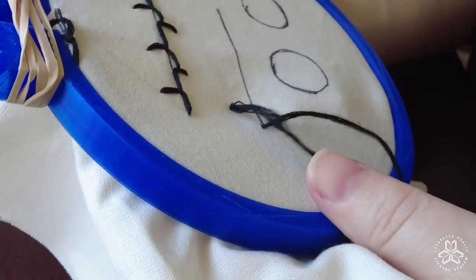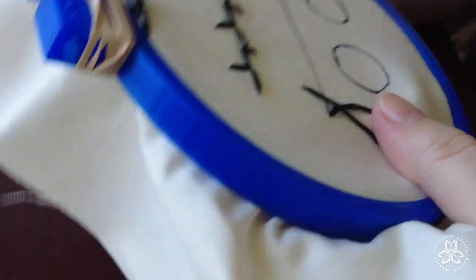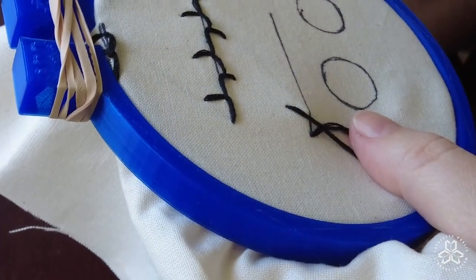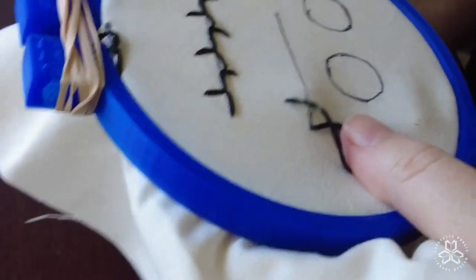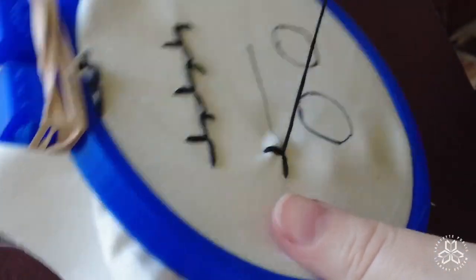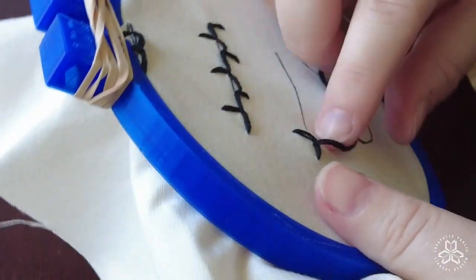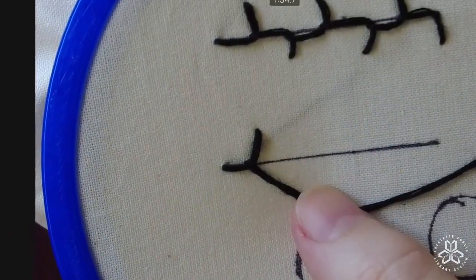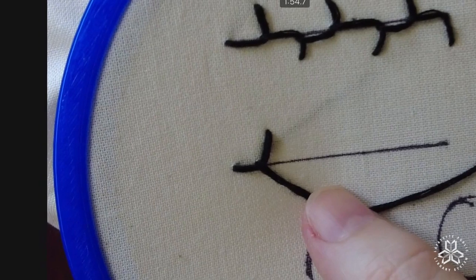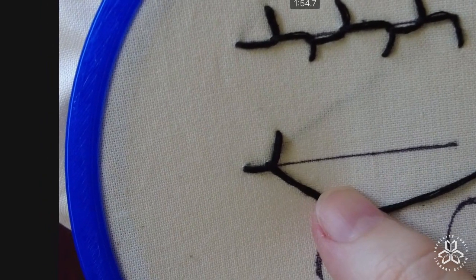And I'm going to put my needle through to the back, form my little loop, and then to create more of an angle, the closer you are to that first point in your L, the more of a slant you'll have. So that's not a great slant, but you can still see that it's more slanted than the one above it.